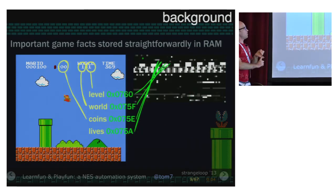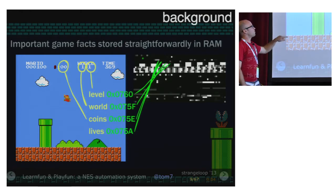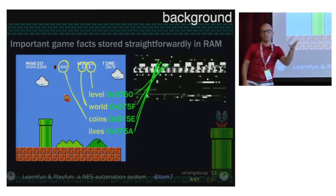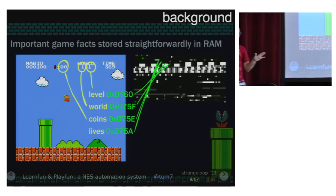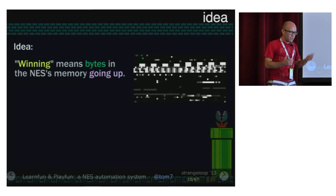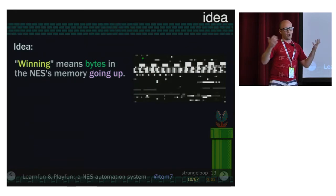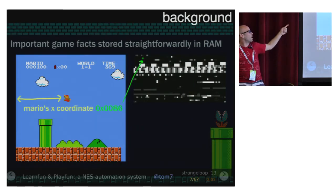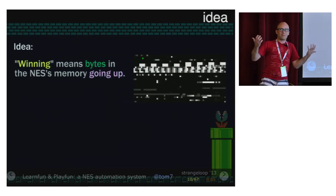There's other stuff like the level you're on — world 1-1 is world 1, level 1 — stored in RAM, along with the number of coins and lives. The important lesson is these games were not written in a fancy way — there's just a variable that says how many coins you have. So the thought is, what does it mean to win a game, doing this in general for all games? The simplest possible thing: these bytes should be going up. The level goes up, the world goes up, you want more coins, more lives, your x-coordinate should get higher. If the RAM is going up, you must be winning the game.